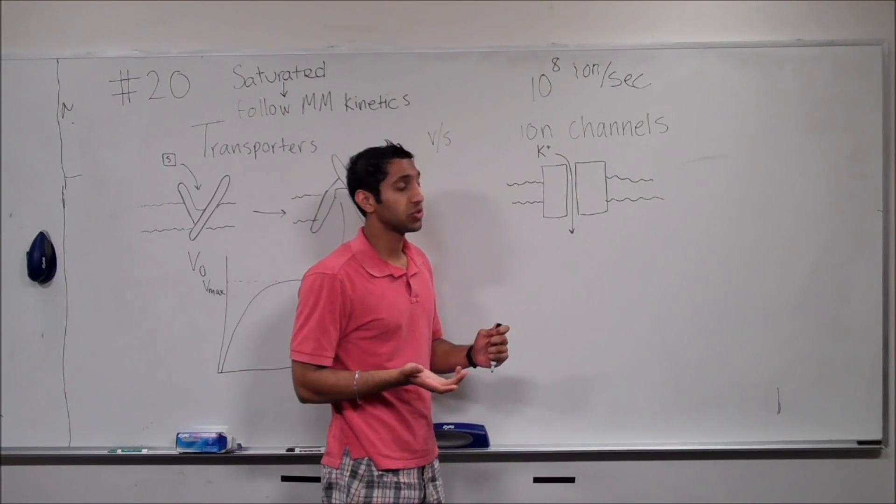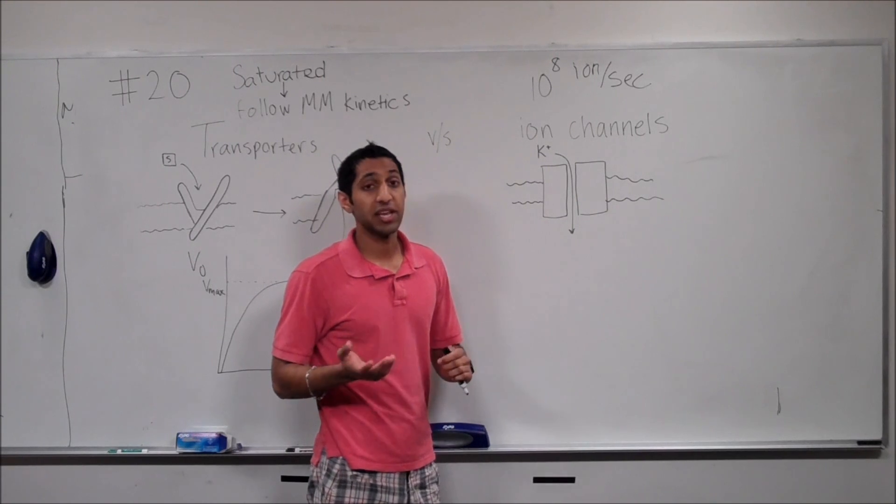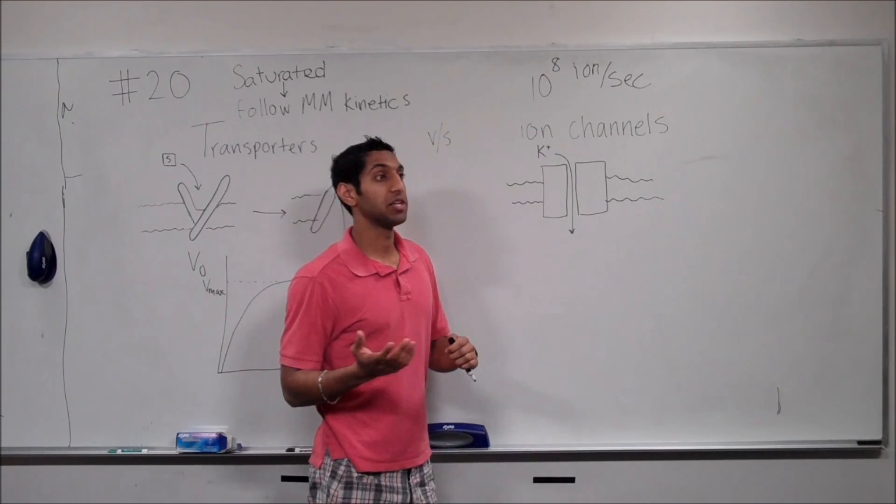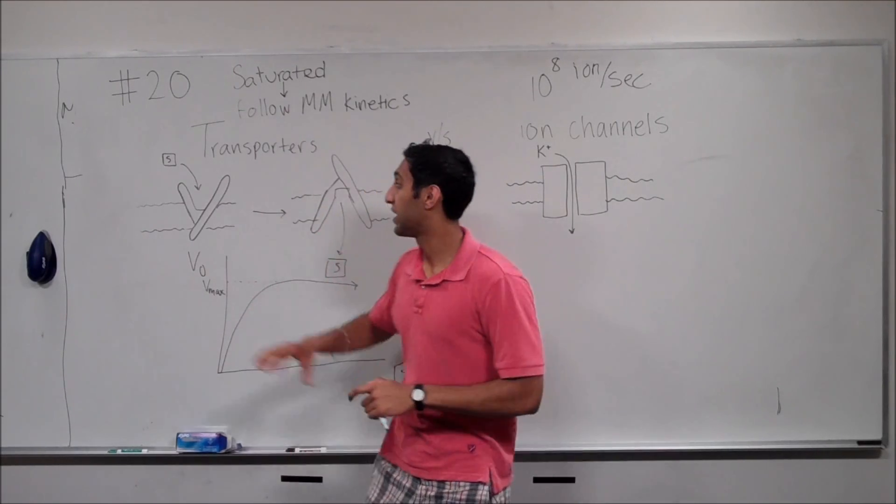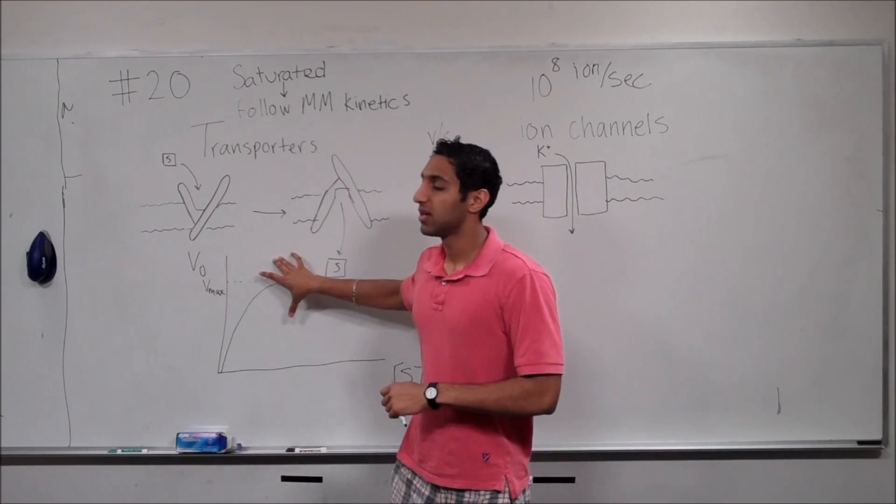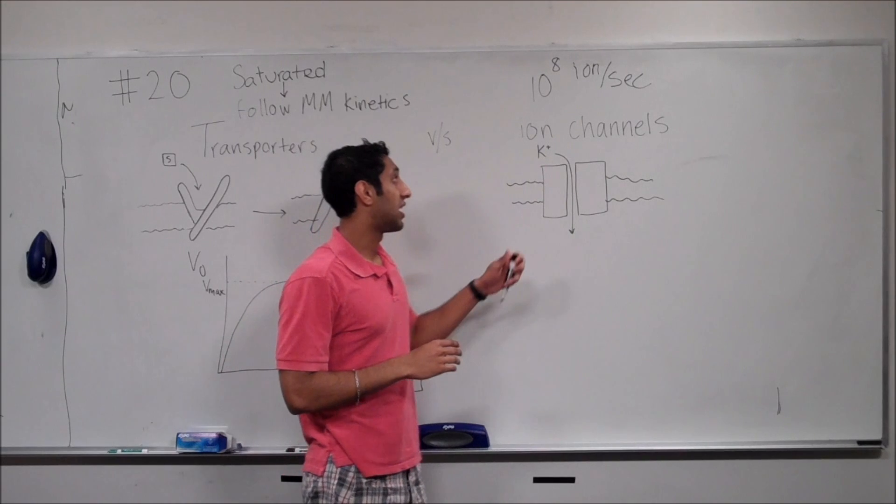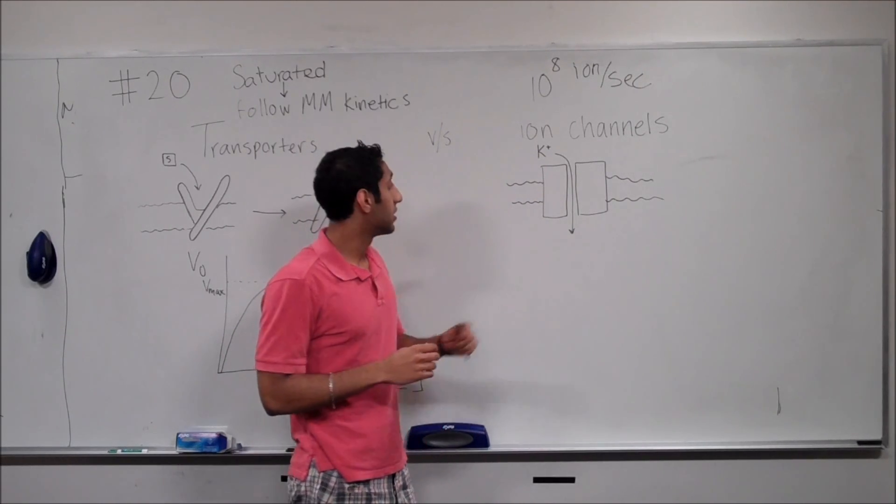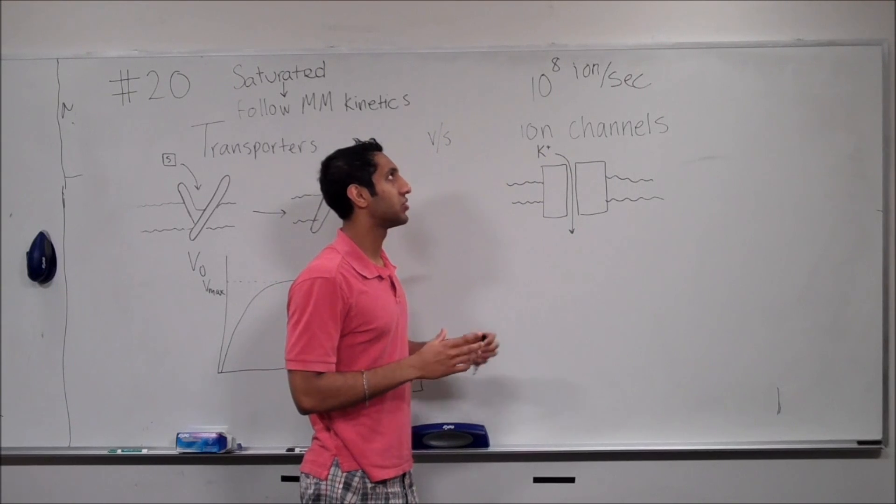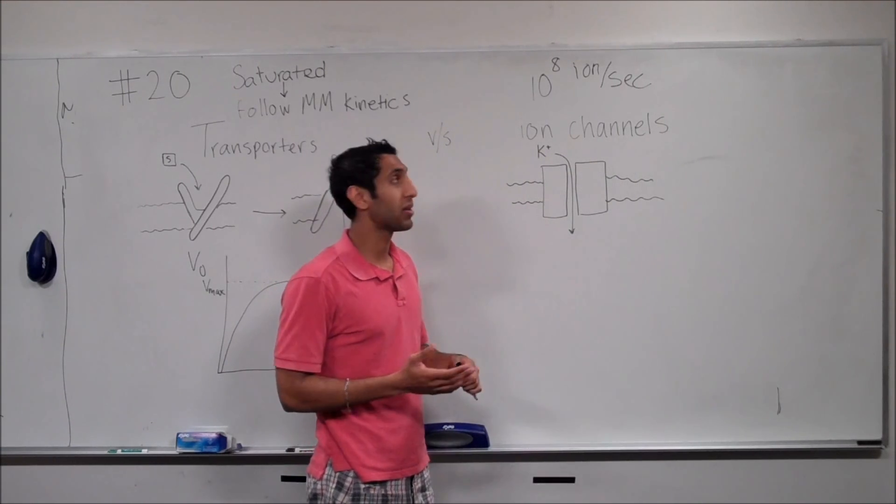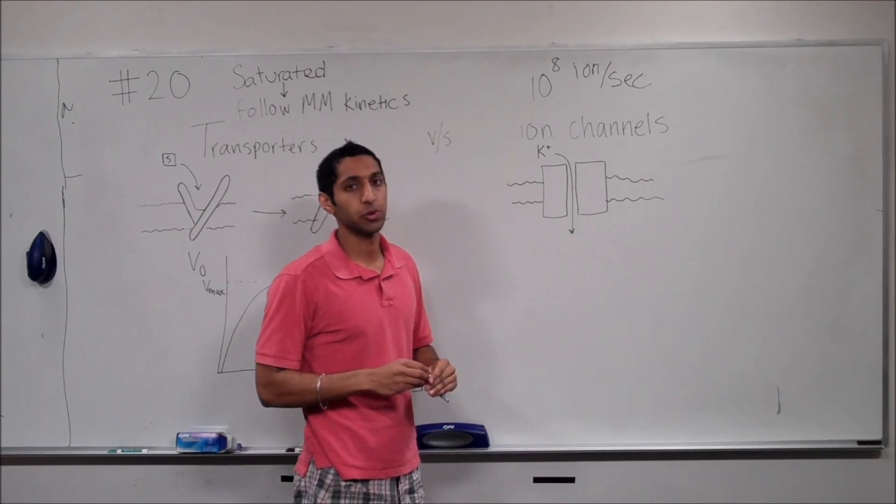Neurons need to be able to initiate action potentials and communicate information quickly. And you wouldn't want to be limited by a Vmax. And so, as a result of that, ion channels fit the bill. They allow ions to go through freely without having to worry about a plateau and how many ions can go through at once.